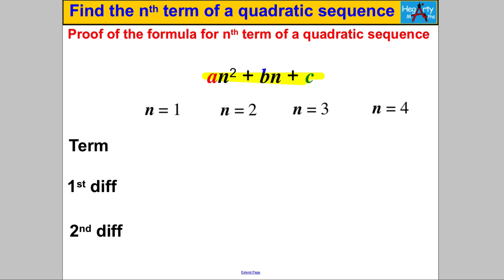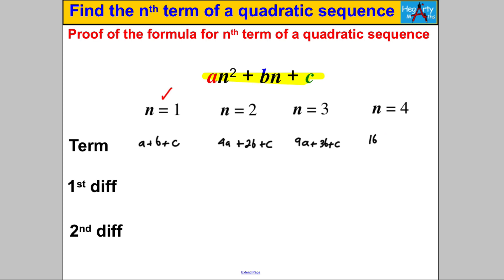Suppose I had a quadratic sequence whose nth term is of this form — I know that is always true because that's why it's quadratic. I'm going to write the first, second, third and fourth terms in terms of a, b, and c. Substituting n = 1 gives a + b + c. Substituting n = 2 gives 4a + 2b + c. Substituting n = 3 gives 9a + 3b + c. And substituting n = 4 gives 16a + 4b + c.